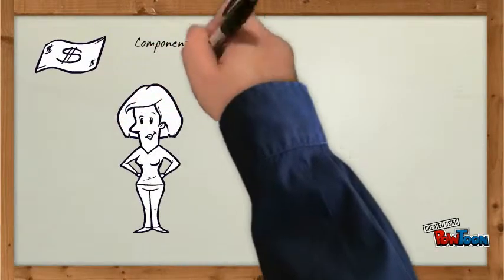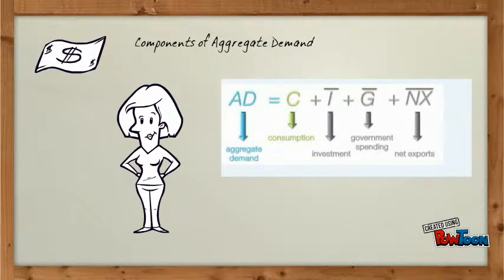Components of aggregate demand. If you look at the equation, it is aggregate demand equals consumption plus gross private domestic investment plus government spending plus net exports. This is what we use to look at aggregate demand.